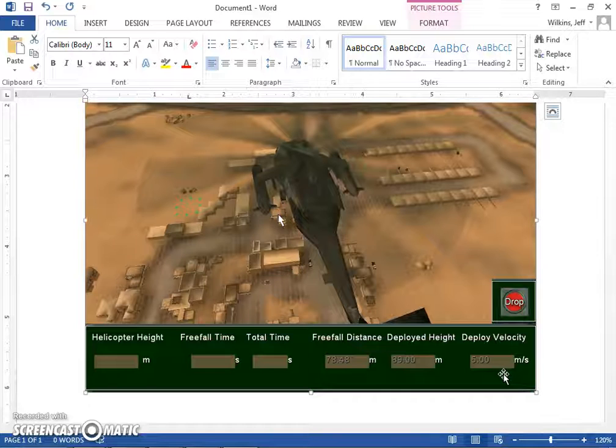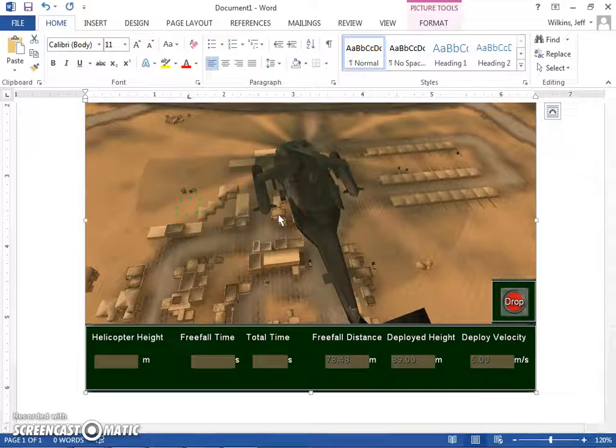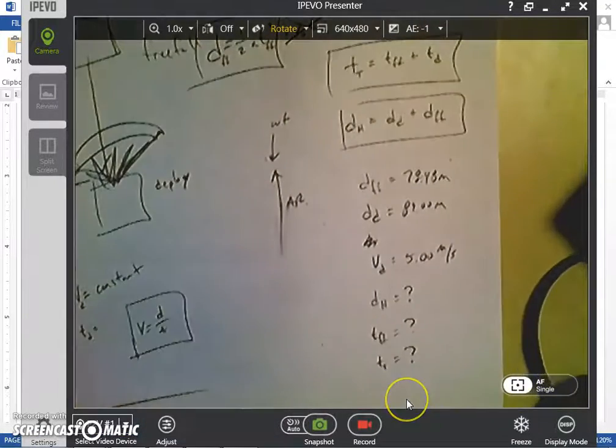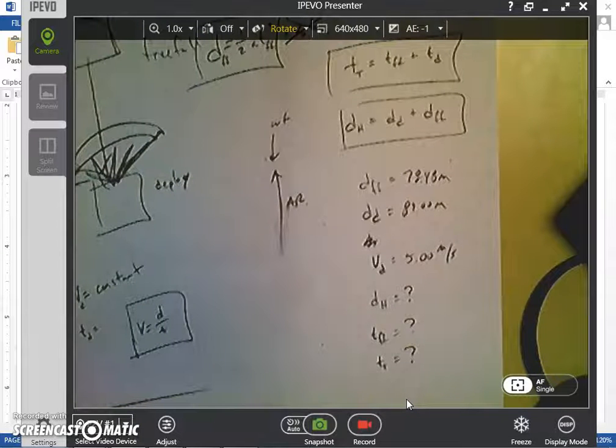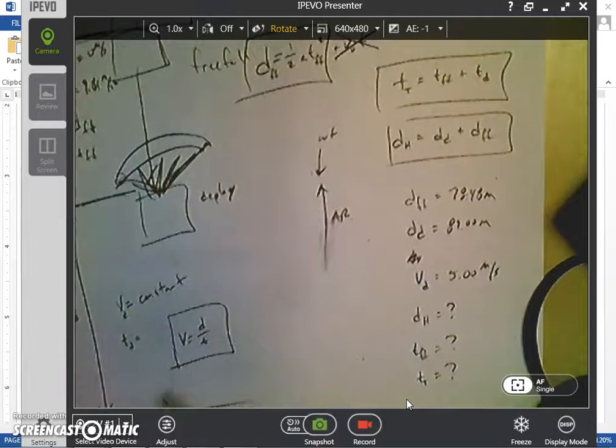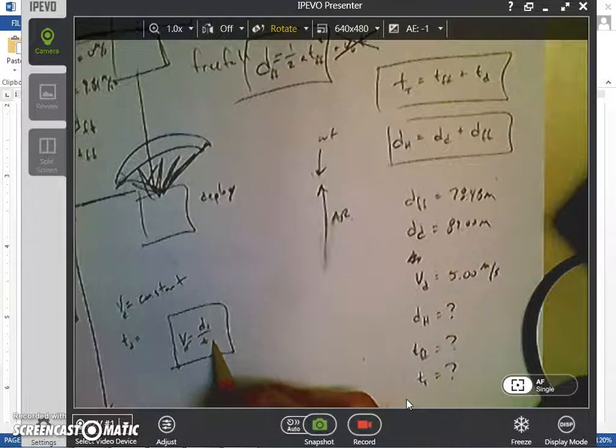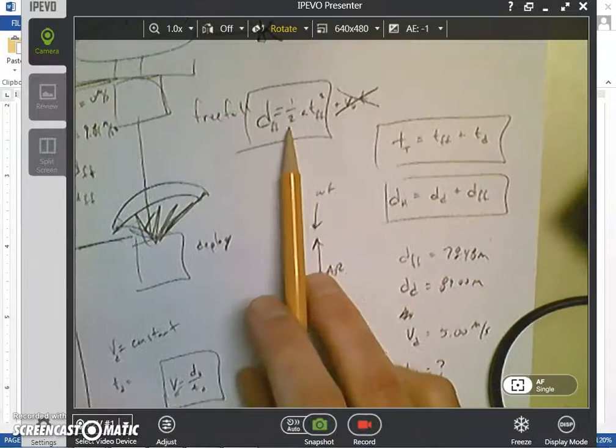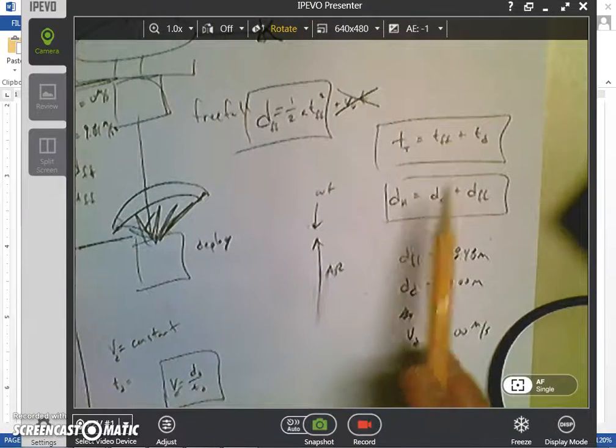And we want to find the helicopter height, we want to find the freefall time, and we want to find the total time. So I've written all these down. Here's our information. This is what we're going to solve for. So if I kind of break it up, these are my D values here, these are my freefall values up here, and then these kind of relate the two together.